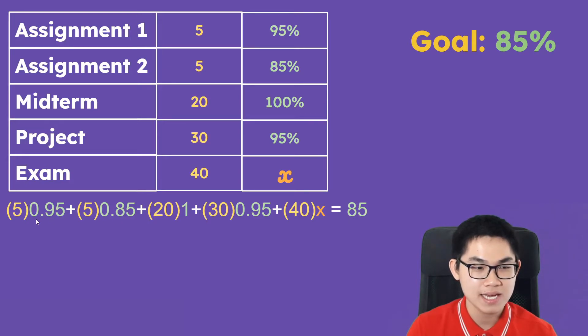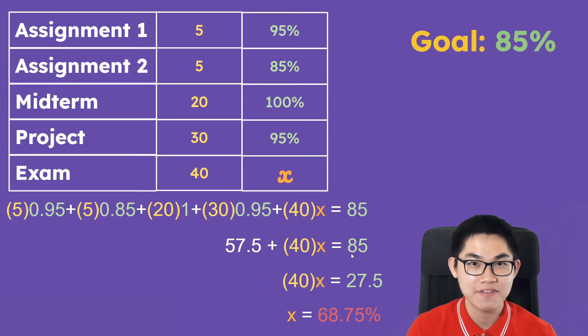So you plug into your calculator and all of this here gives you 57.5. Now you have this plus 40x, which is equal to 85, and you solve for x, you will get 68.75%. What this means is you only need a 68.75% on the exam to get an 85% on your transcript.